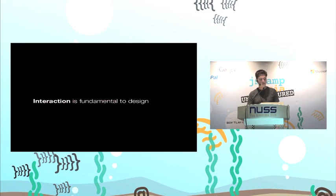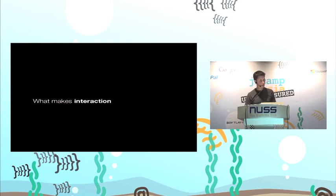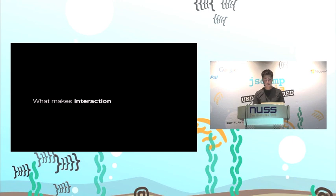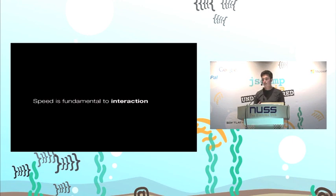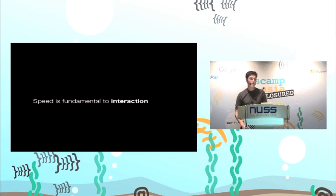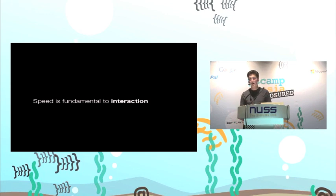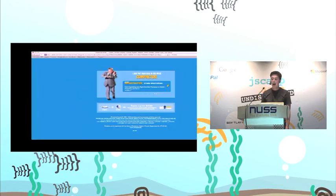So what makes up interaction? There are various parts — for a mobile app there's the touch and feel of the app and how it responds — but one of the key parts of interaction is speed. Speed is fundamental to interaction. When you're using an app you really notice the speed; it's fundamental to the experience. So if speed is fundamental to interaction, and interaction is fundamental to design, then it follows that speed is fundamental to design.